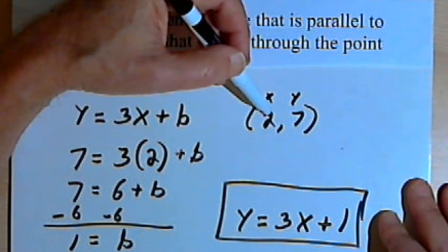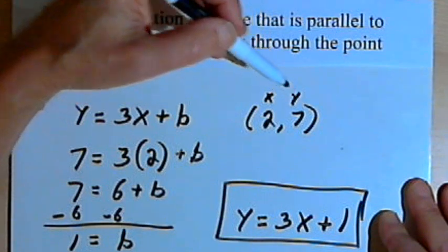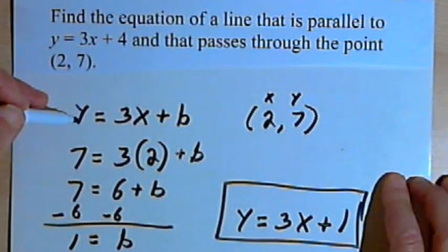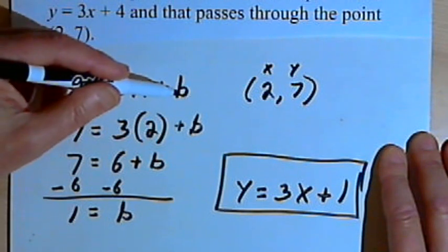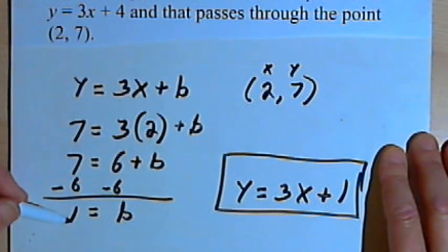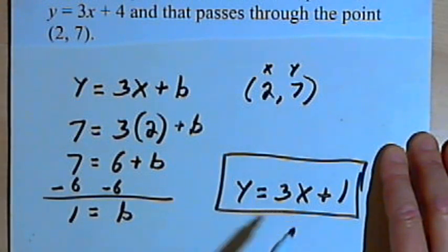Because when I substituted those values, 2 for x and 7 for y into my partially completed equation to find the b, I found out that b equals 1. So my end result is y equals 3x plus 1. And that's really all there is to it.